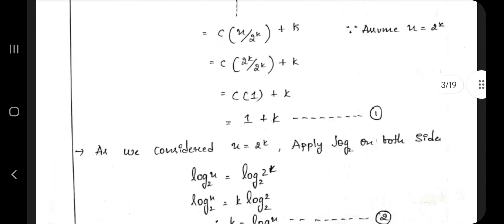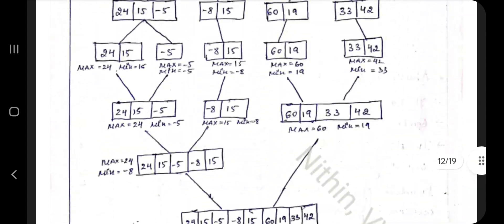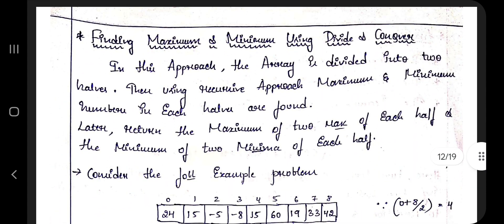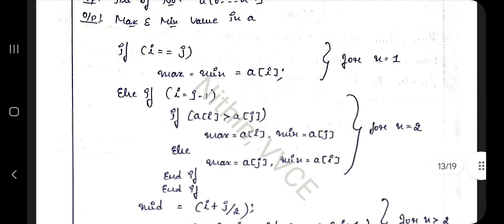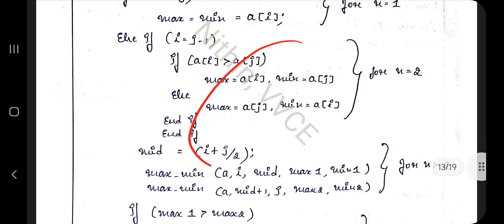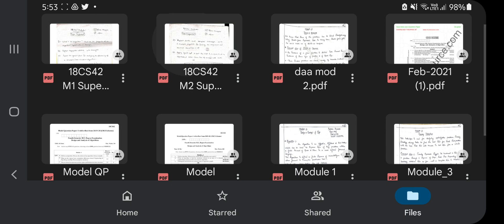If you come to page number 13, you will have the code for finding the maximum and minimum using divide and conquer. This is all what you have to write and explain the algorithm. That's the answer for the first question.